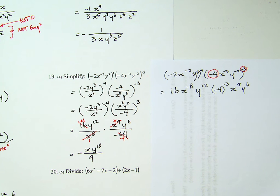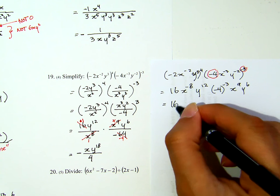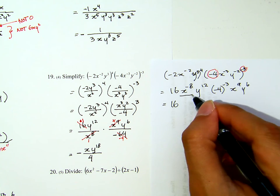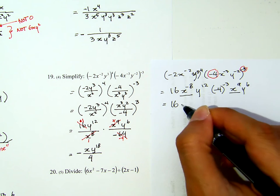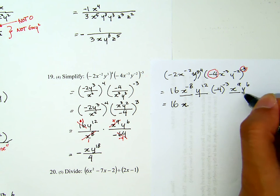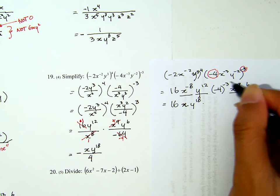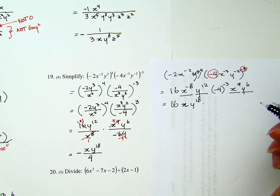Let me continue further. As for the numbers, it's 16. As for the x, x to the negative 8 and x to the 9th, that x to the 1, or I can just write x. Y to the 12th and y to the 6th is y to the 18th. Now, the problem is, what is negative 4 to the power of negative 3?